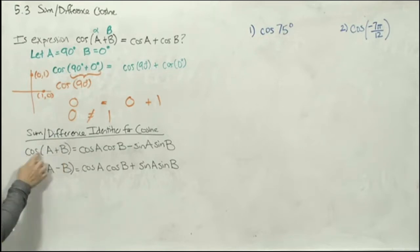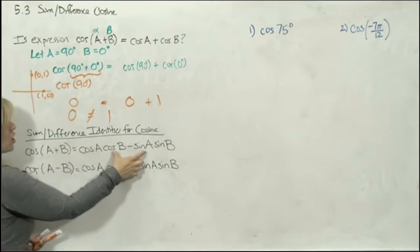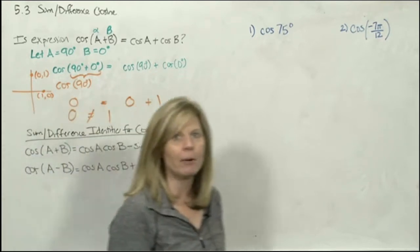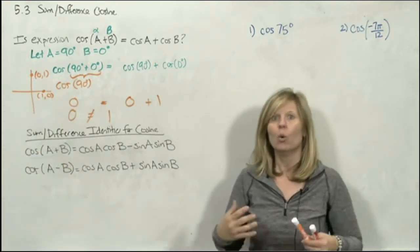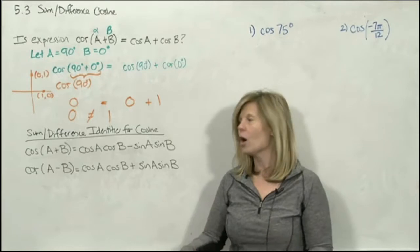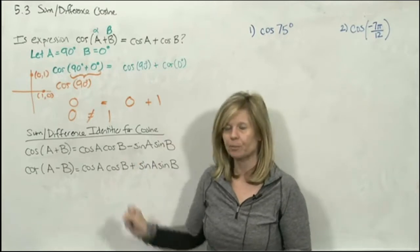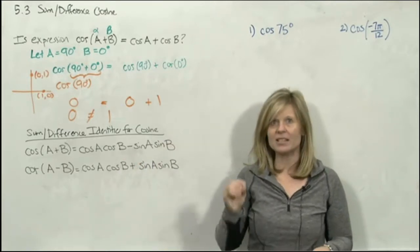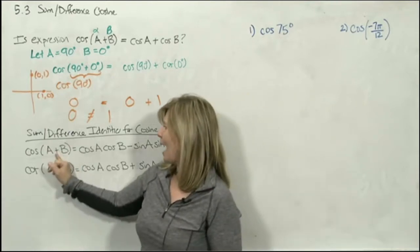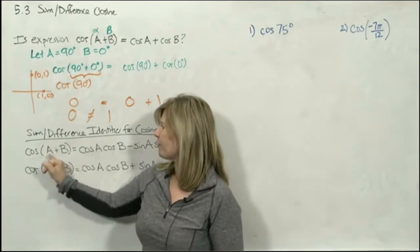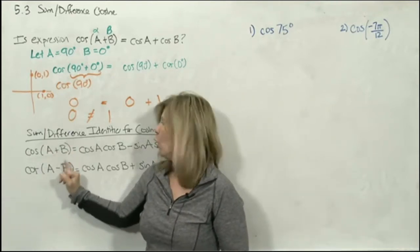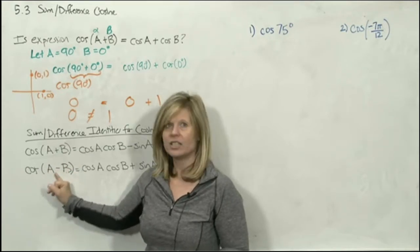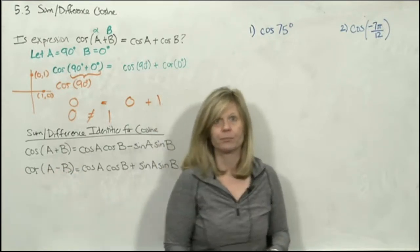These identities are called sum and difference identities because we're adding two angles — a sum — or subtracting two angles, alpha and beta — a difference. You do not need to memorize them; I'm going to give them to you. What you need to know is how to work with these identities.